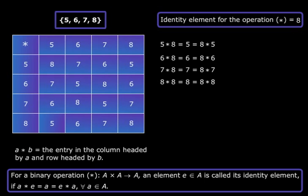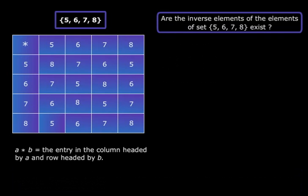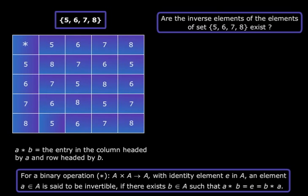Now that we have found out the identity element, let us also see whether the inverses of all the elements of this set exist or not. Now for a binary operation star that is defined from A cross A to A, with identity element e in A, an element a that belongs to set A is said to be invertible if there exists b that belongs to set A such that a star b equals e equals b star a.